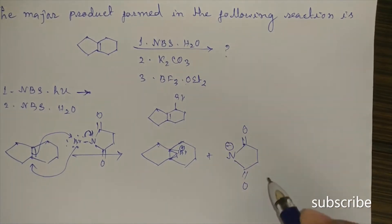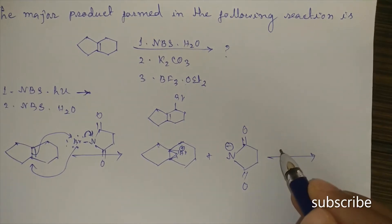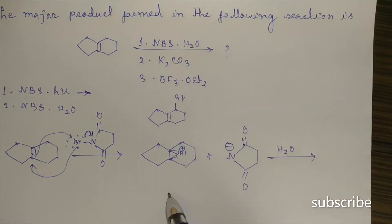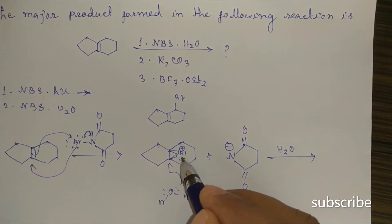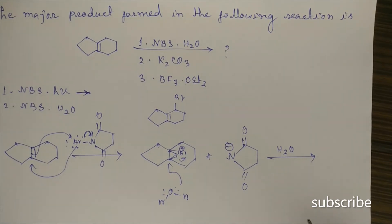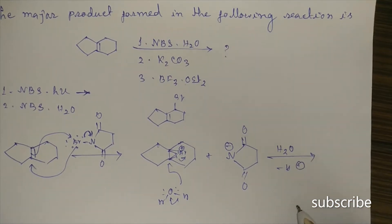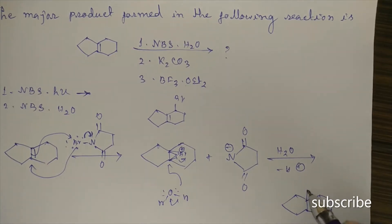Now in the presence of H2O, the bromonium ion ring will be opened up. H2O attacks from below the plane, and the corresponding halohydrin is formed — that means Br will be above the plane and OH will be below the plane.